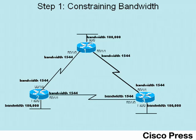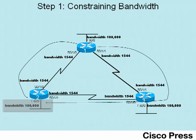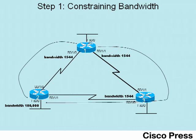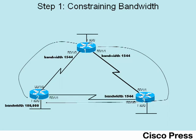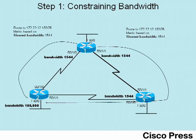EIGRP's metric calculation uses the slowest, or constraining, bandwidth — not the overall bandwidth. For example, in this video lab we're focusing on the route from R1 to the lower left-hand LAN subnet. There are two routes: one going directly from R1 to R2, and another going from R1 to R3 and then over to R2. EIGRP only considers the slowest bandwidth amongst all the links in a particular route — specifically the slowest bandwidth on the outgoing interfaces. As you can see, the slowest bandwidth in each case is 1544, so from EIGRP's perspective both routes are equal, at least in regards to bandwidth.